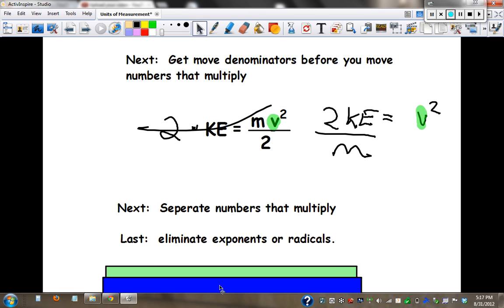Finally, the last step: eliminate exponents or radicals. Now these are gone. The square kills the square root, and now we're just left with our answer. Velocity equals 2 times kinetic energy divided by mass, all square root.